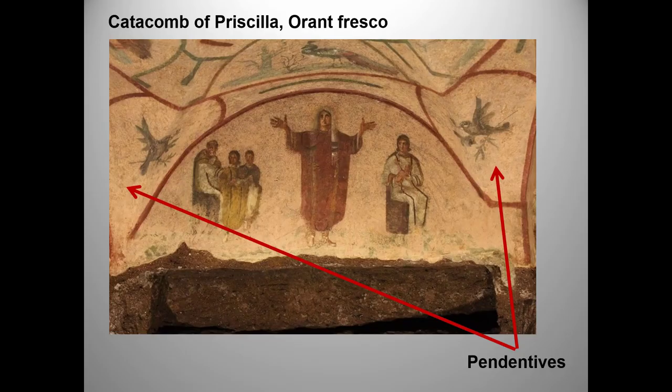In the pendentives — those are the somewhat triangular corners below the shallow dome — and in the shallow dome itself, we see doves, which were a symbol of peace and the Holy Spirit. Peacocks are a symbol of eternal life. And quails both walk on the earth and fly, symbolizing the strong relationship between earth and heaven in Christian faith.